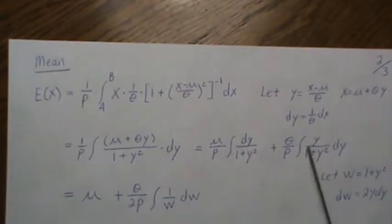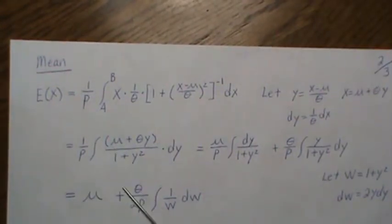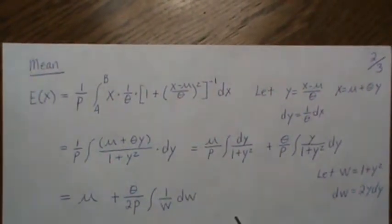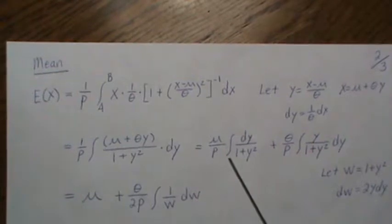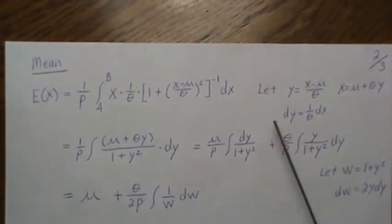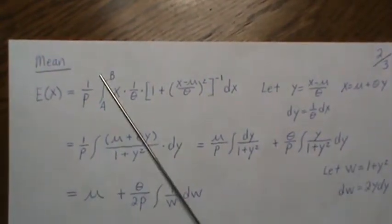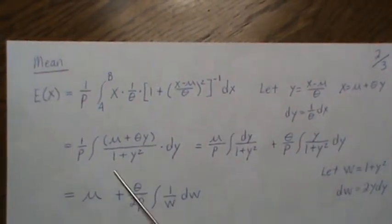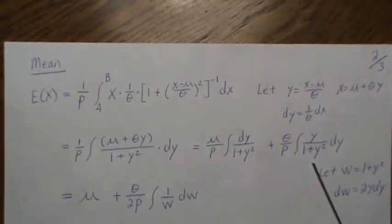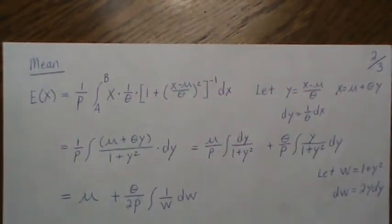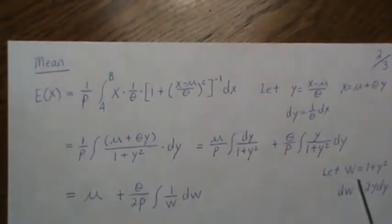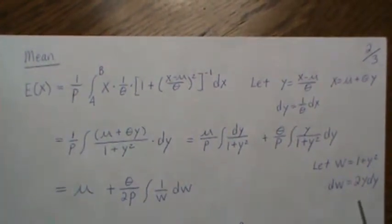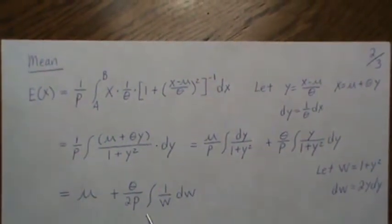And notice I leave off the integration limits. I didn't really mean to do that. I usually don't when I end up having the video. But when I'm doing the calculations on my own, I get lazy and don't put them on. So technically, we should put A and B in here and put it on the top and then an A in here and put it on the bottom. But I knew I was coming back to the X world, so I was just going to ignore them all. But anyway, so here we let W be this 1 plus Y squared. So we take the derivative of both sides and we end up with this.